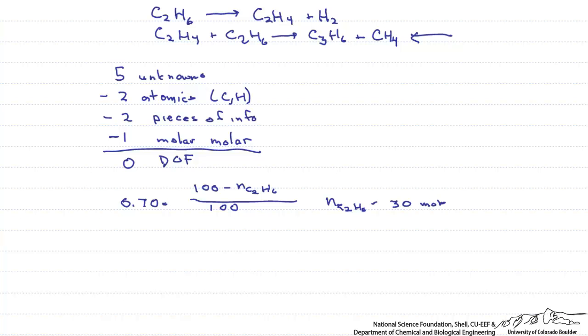The next thing that we know is that the selectivity of our ethylene to propylene is 5. And finally,